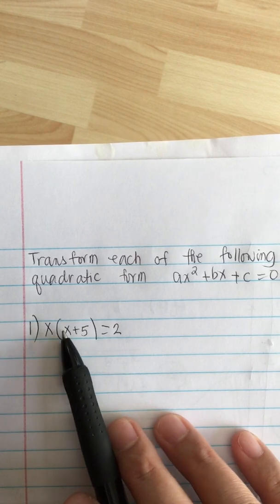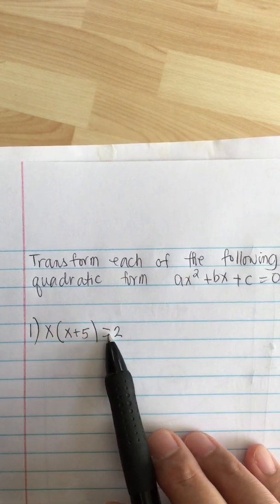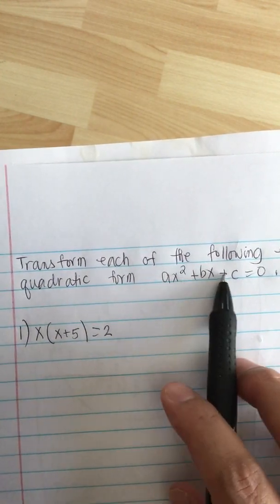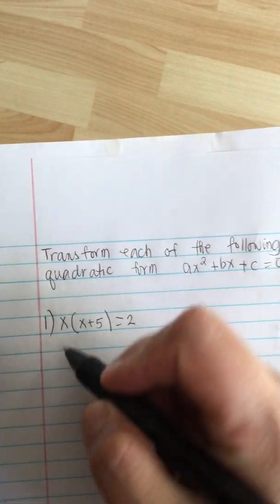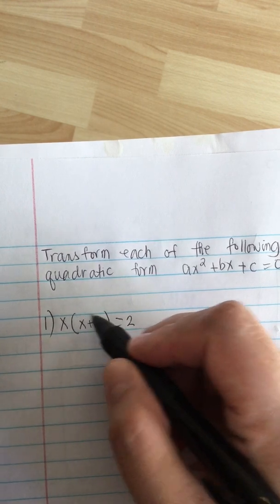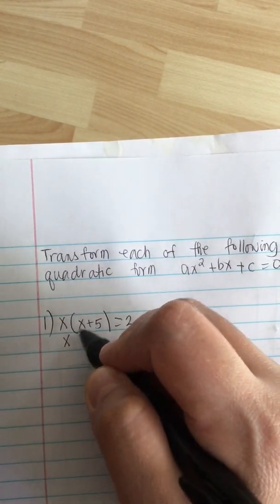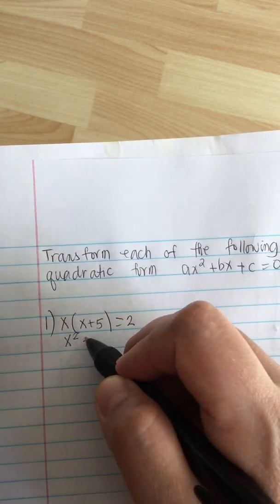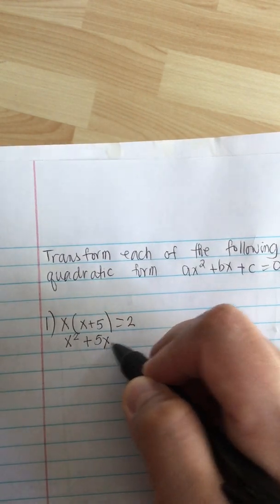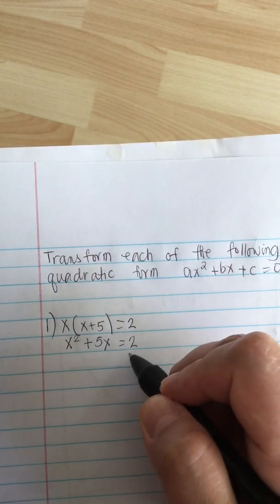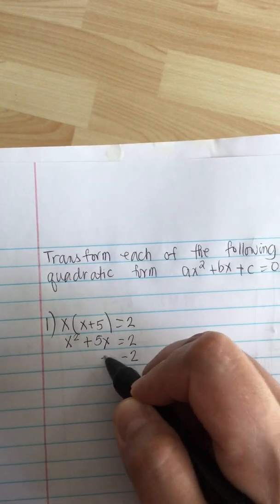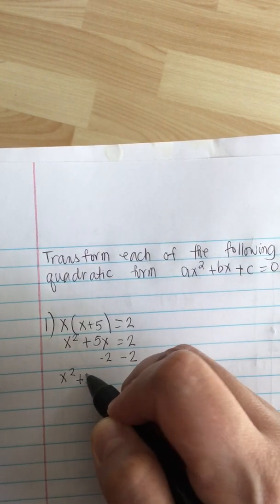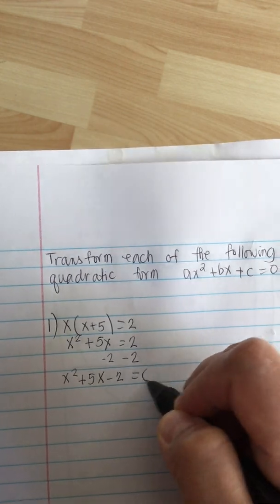So we have x times x plus 5 is equal to 2. We want this to look like the standard form. So we distribute x inside the parentheses. x times x is equal to x squared, x times 5 is equal to 5x, this is equal to 2, and then we subtract 2 and put it on this side. So we have x squared plus 5x minus 2 is equal to 0.